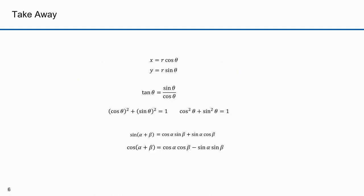Here's what I want you to take away from this part — these trig identities. x equals r cosine theta. y equals r sine theta. The tangent of theta equals sine theta over cosine theta. Cosine squared theta plus sine squared theta equals 1. The sine of alpha plus beta equals cosine alpha times sine beta plus sine alpha times cosine beta. Cosine of alpha plus beta equals cosine alpha times cosine beta minus sine alpha times sine beta.